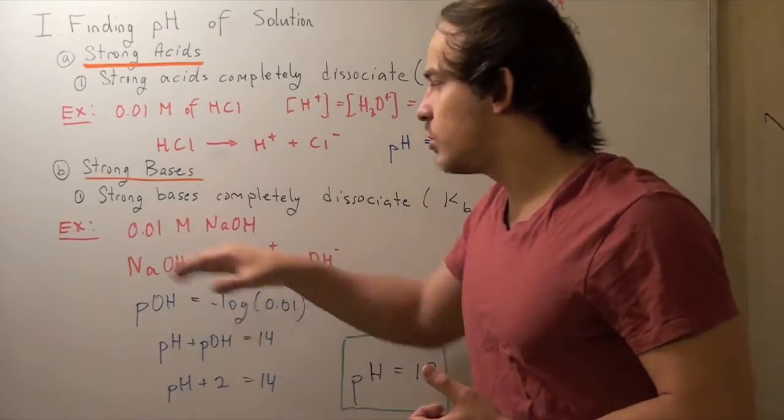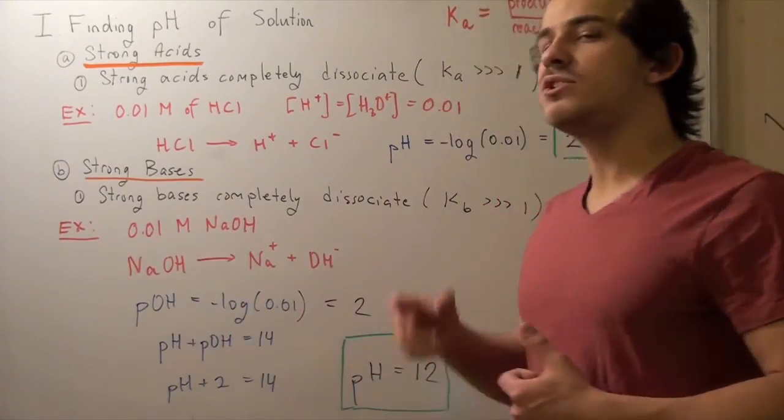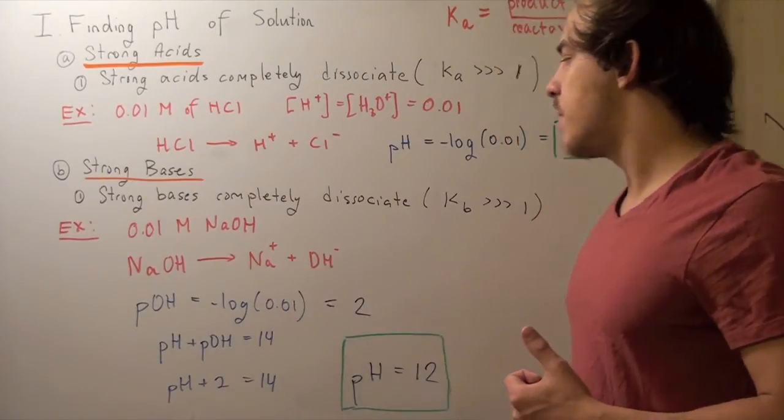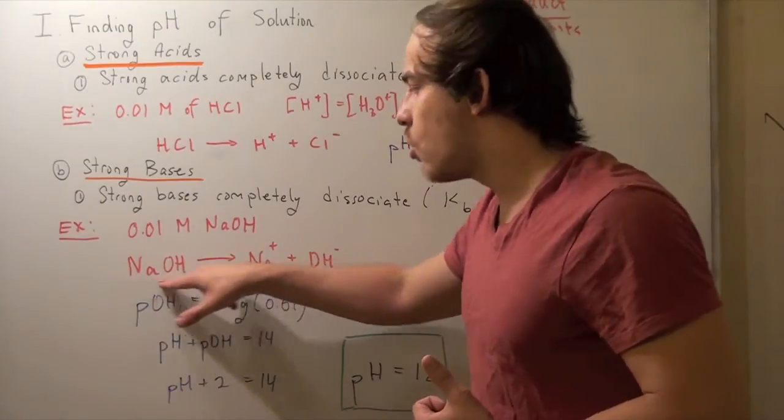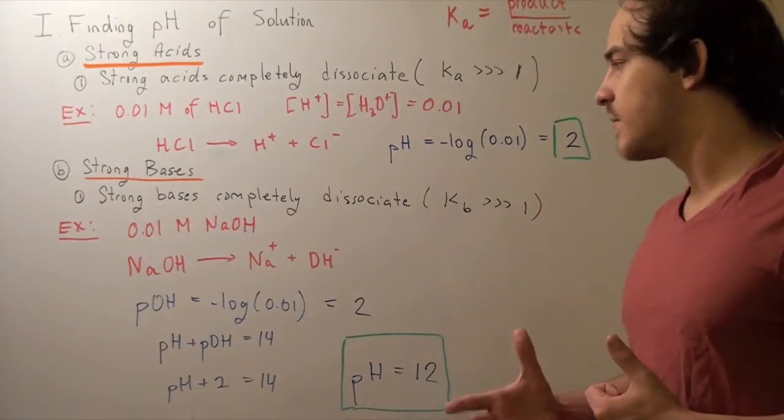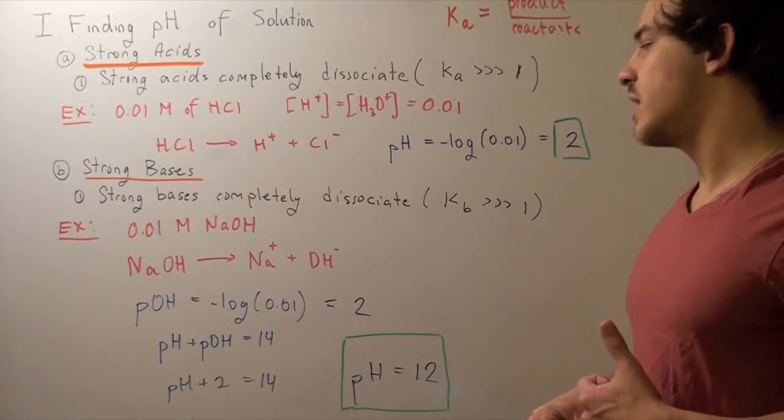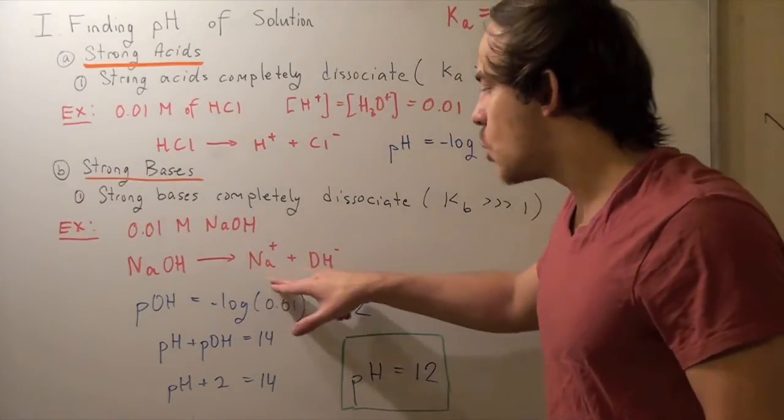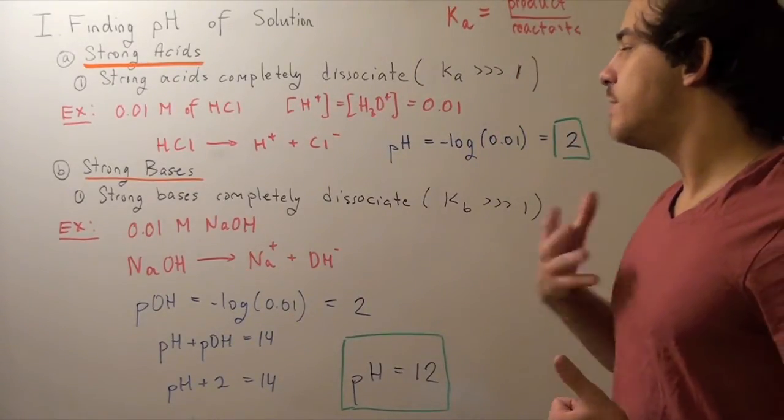So if we begin with 0.01 molar of sodium hydroxide, that guy will completely dissociate into our sodium ion and hydroxide ion. And that means essentially no or zero concentration of this guy's left over at the end. So how do we find the pH?